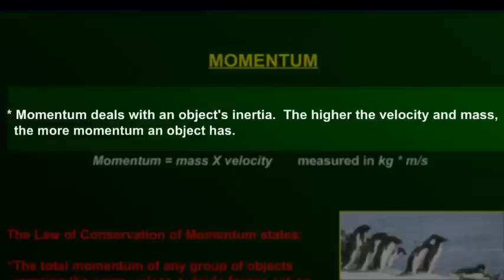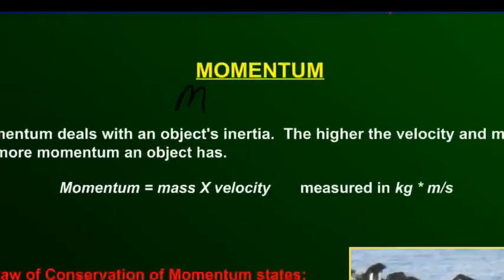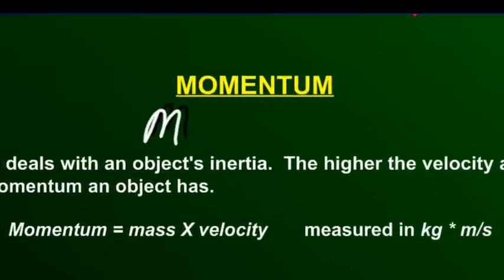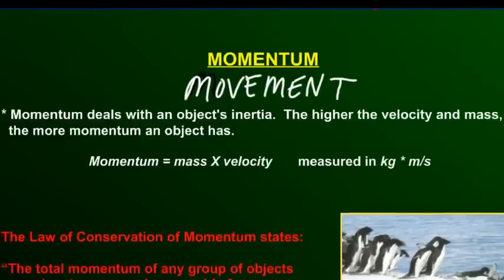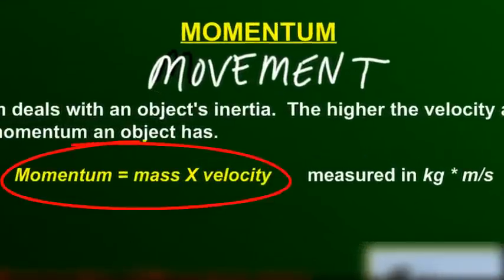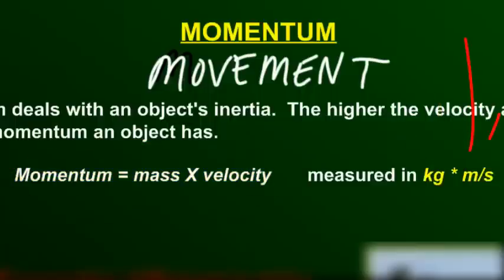Momentum is going to deal with an object's inertia. The higher the velocity and mass, so for instance, a large truck, the more momentum the object's going to have. Momentum means movement. Momentum's formula is mass times the velocity. So mass is measured in kilograms and velocity is measured in meters per second.